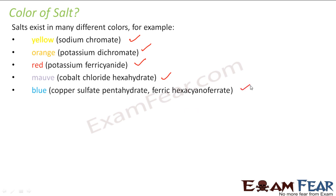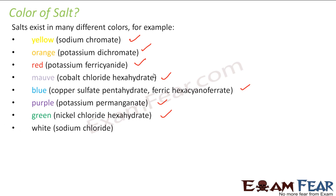Copper sulfate and ferric hexacyanoferrate is blue in color. Potassium permanganate is purple in color. Nickel chloride hexahydrate is green in color. Sodium chloride, the common salt, is white in color. We know this. And you have magnesium sulfate heptahydrate which is colorless.